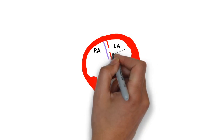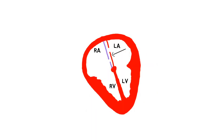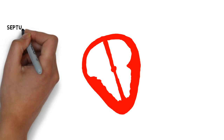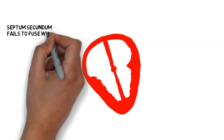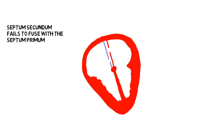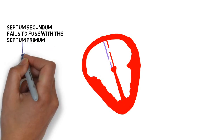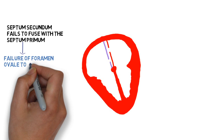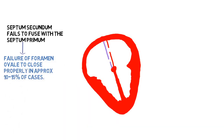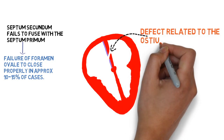As left atrial pressure increases, the septum primum is pushed against the septum secundum, causing them to fuse together and the atrial septum develops. However, when a defect occurs, the septum secundum fails to fuse with the septum primum, leading to failure of the foramen ovale to close properly in approximately 10 to 15 percent of cases — this is considered a defect related to the ostium secundum.